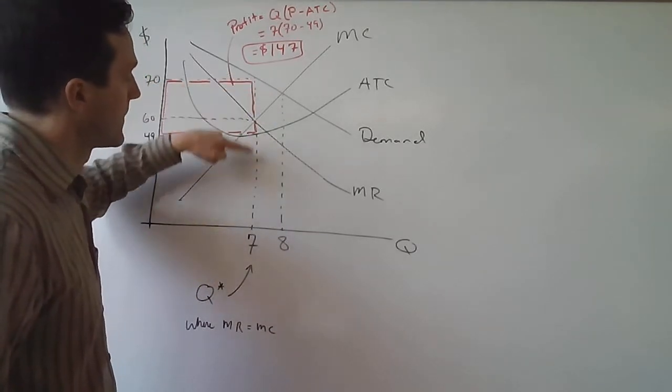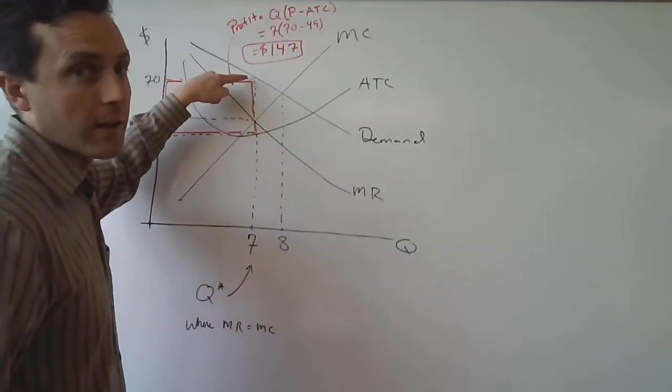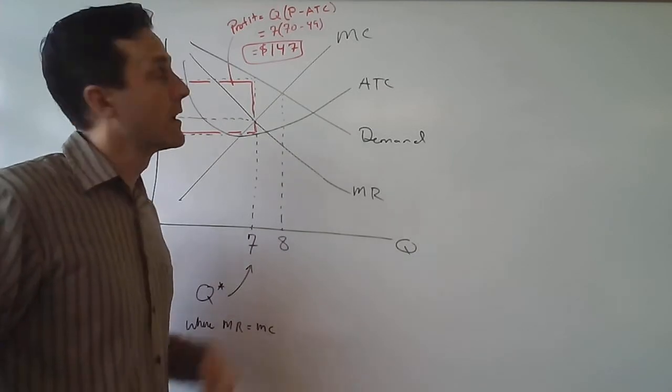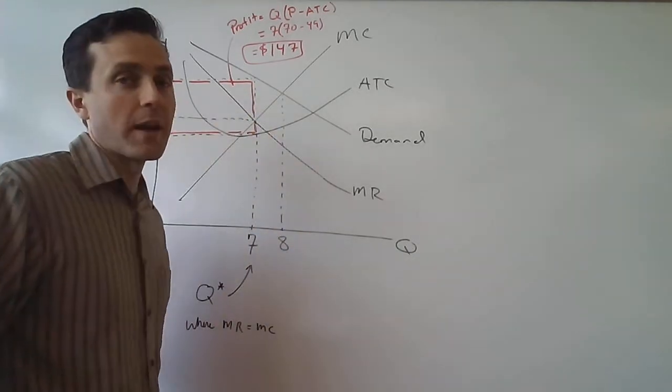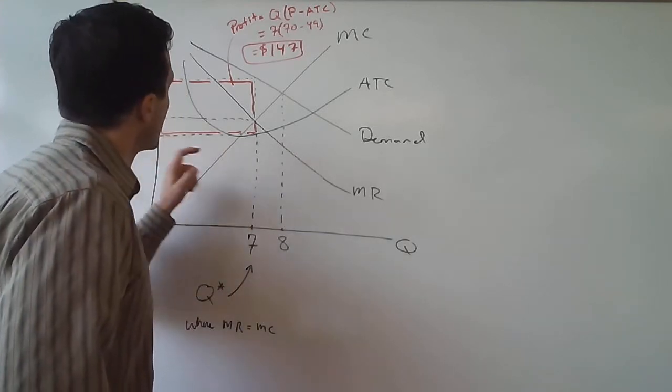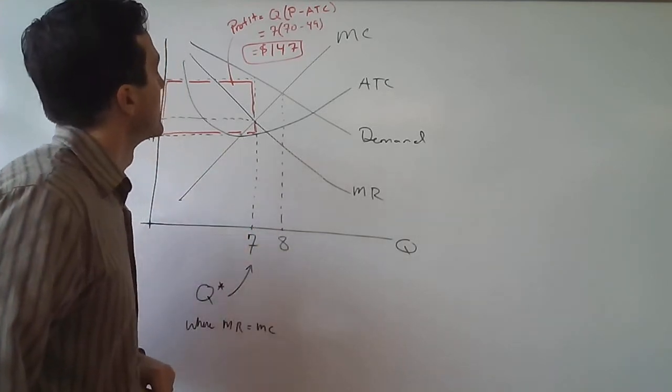Looking up at the demand curve, if they want to sell seven units, then the highest price people would be willing to pay to buy that many units would be $70. So the firm would charge $70, and the quantity would be seven.